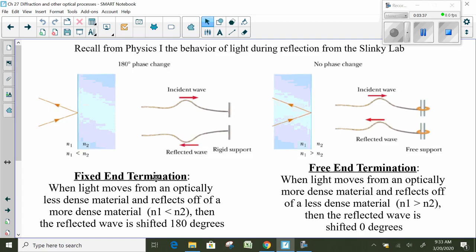When you have fixed end termination, that happens optically when you go from something that's got a low density into a higher density. So the material we're in first has a lower index of refraction going into the higher index of refraction. We're trying to go from a less dense to a more dense, we get a reflected wave that's shifted 180 degrees from the initial incoming wave.